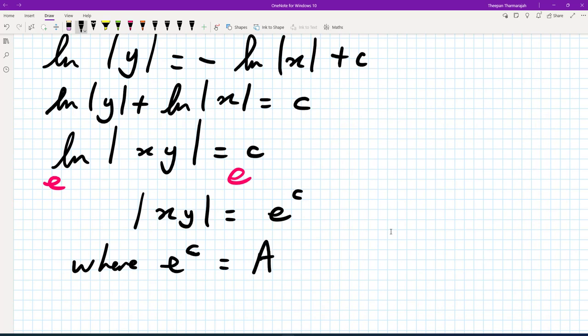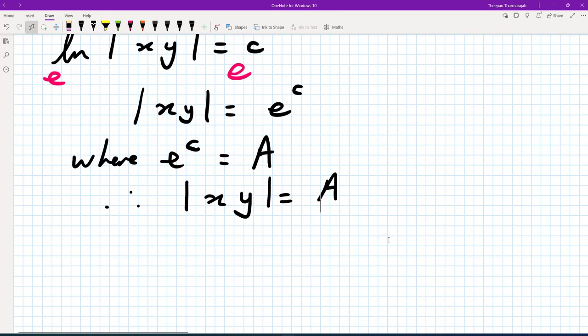So therefore, we can have the following. We can say that mod xy is equal to a. So we could write that as x times y is a.